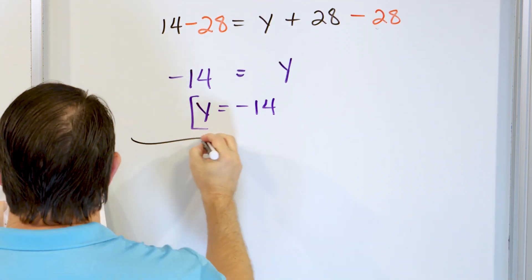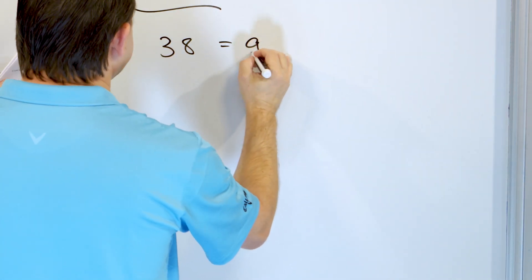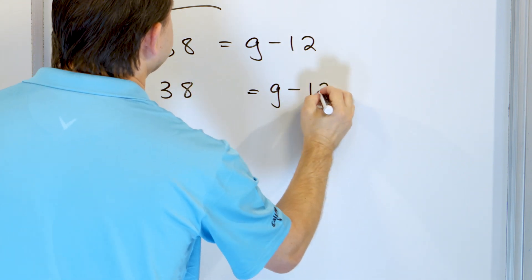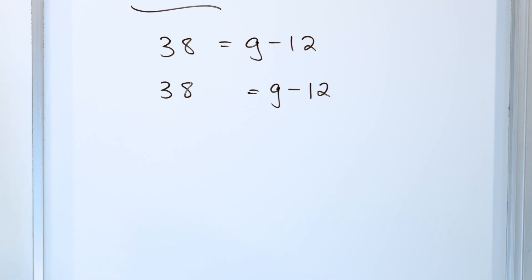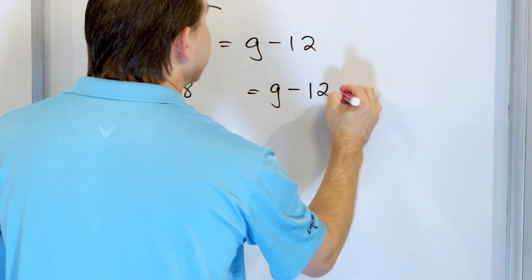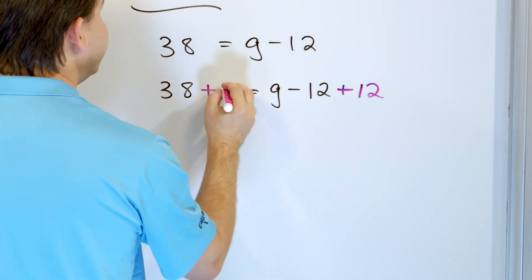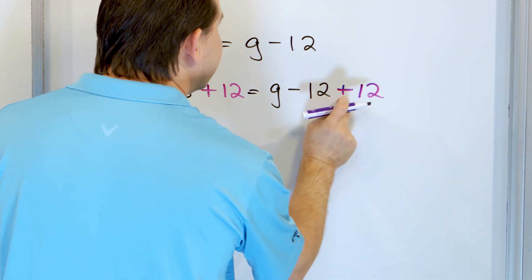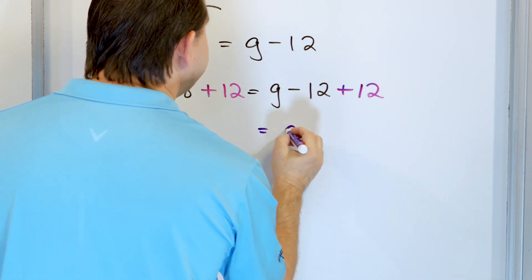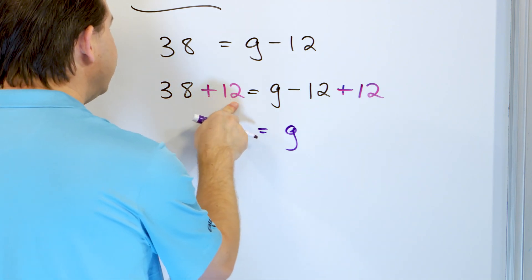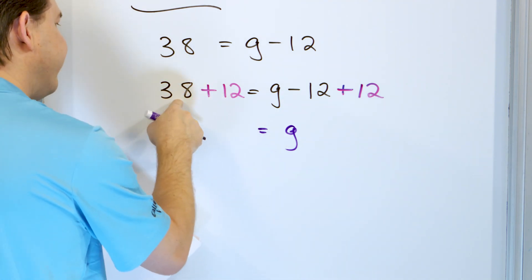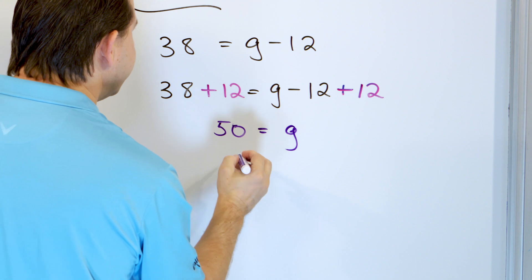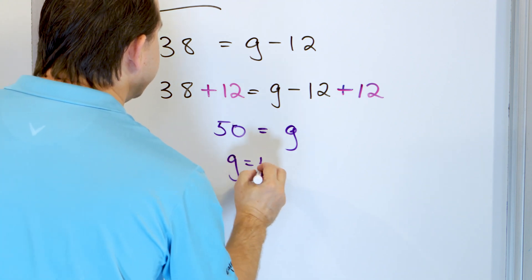Problem 6: 38 equals g minus 12. What we want to do is get g by itself, but we're subtracting 12, so we undo it by adding 12 to both sides. On the right-hand side, negative 12 plus positive 12 is zero, leaving g by itself. And then 38 plus 2 is 40, and then 10 more is 50. So g is equal to 50.